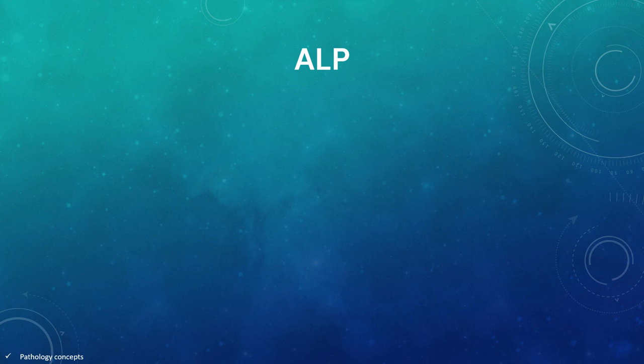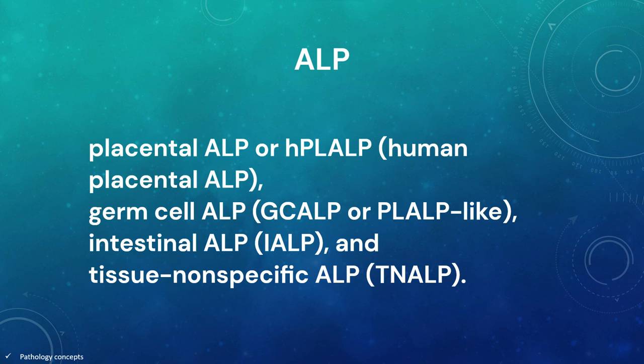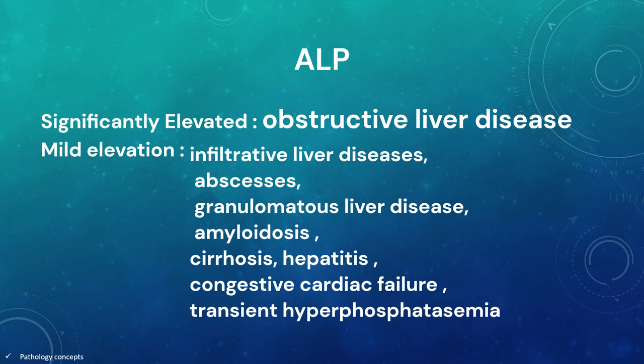There are 4 isoenzymes of alkaline phosphatase: first is placental alkaline phosphatase, second is germ cell alkaline phosphatase, third is intestinal alkaline phosphatase, and fourth is tissue nonspecific alkaline phosphatase. Significantly elevated alkaline phosphatase is associated with obstructive liver disease. Mild elevation of ALP can occur in infiltrative liver disease, abscesses, granulomatous liver disease, amyloidosis, cirrhosis, hepatitis, congestive cardiac failure and transient hyperphosphatasemia.